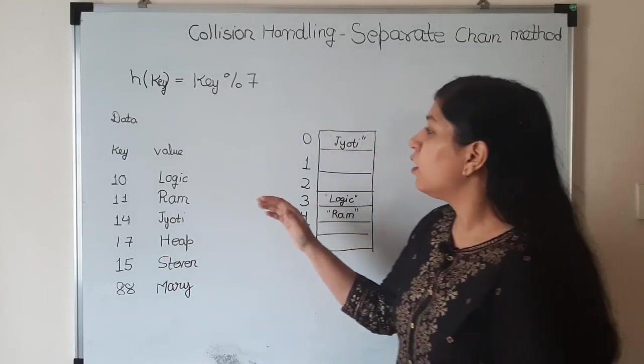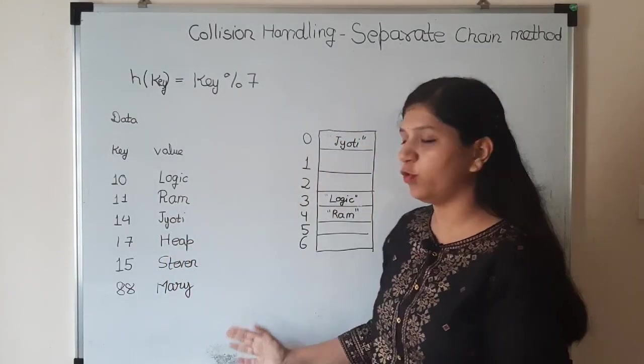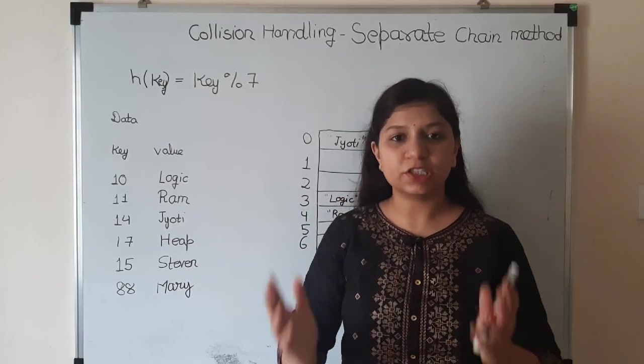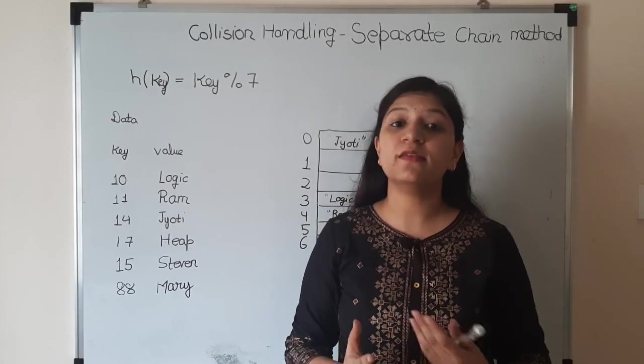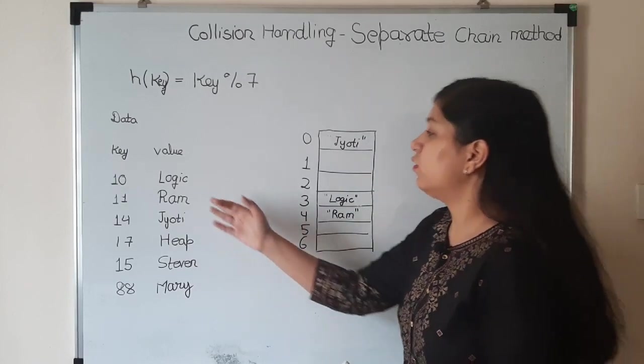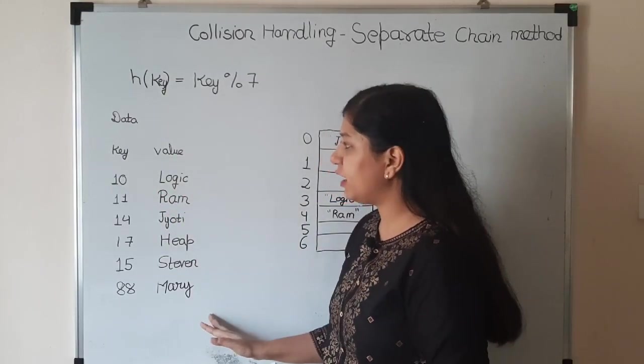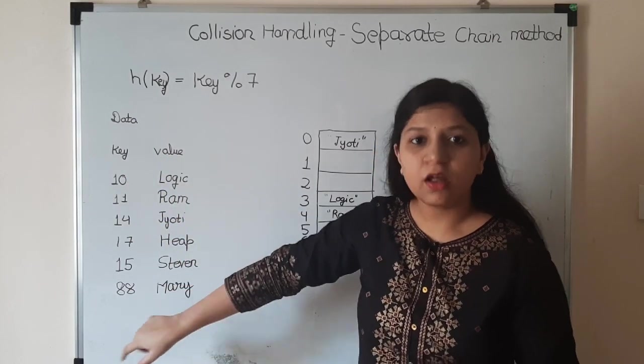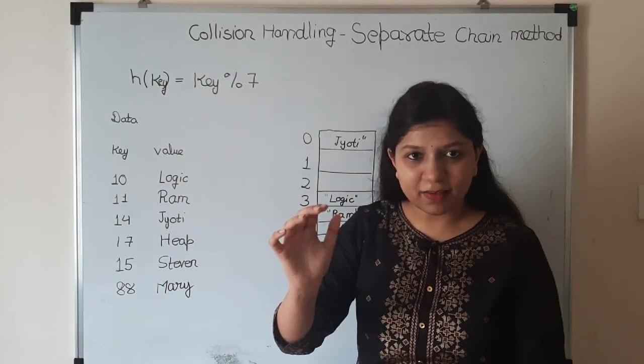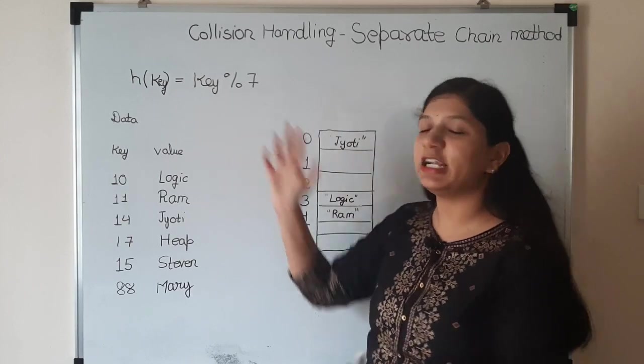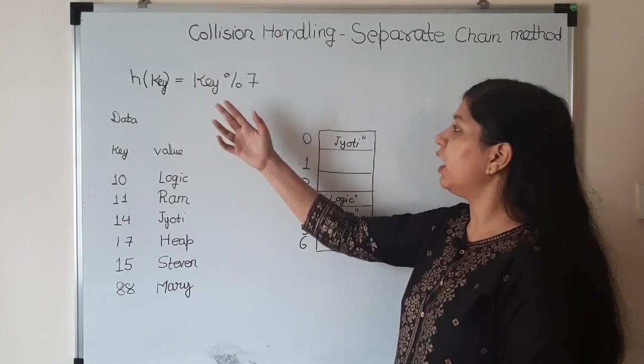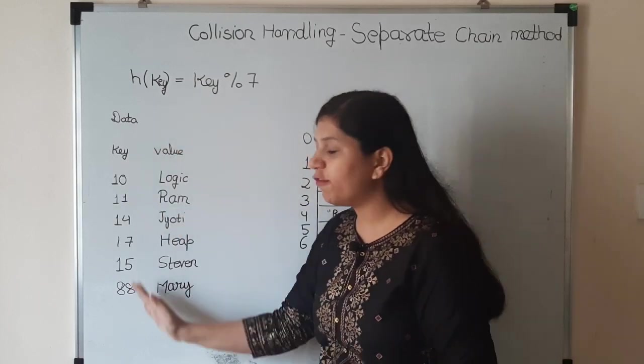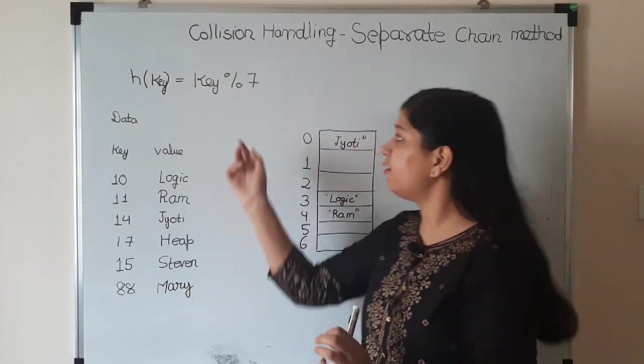Let's revisit the problem. You have some data given to you - key value pairs - and you need to create a hash table because you want to make search faster. These are the keys, these are the values. To make these arbitrary keys into fixed size keys, we use a hash function.